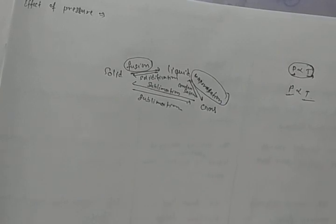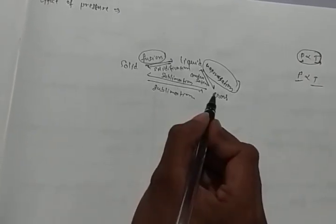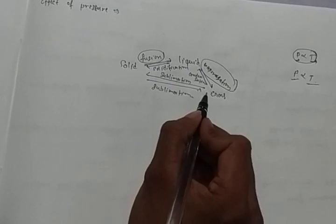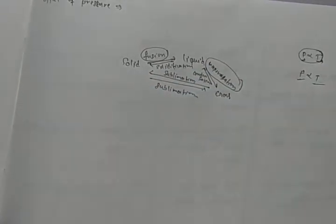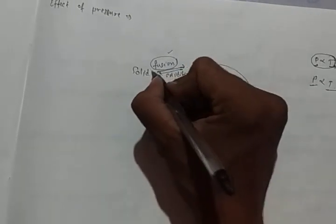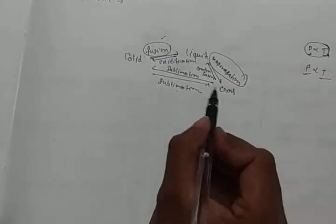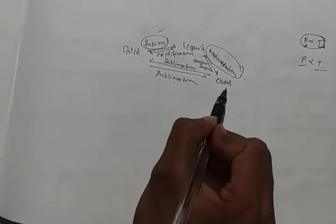From the process we get gas, and through the same process we can get solid. For example, camphor is a solid — when we give heat to camphor it changes to gaseous form. This is sublimation. Or if we take gas and change it to solid form, that is also sublimation. Fusion: when solid changes to liquid, that is fusion. When liquid changes, that is vaporization. When solid changes directly to gas or vice versa, that is sublimation.